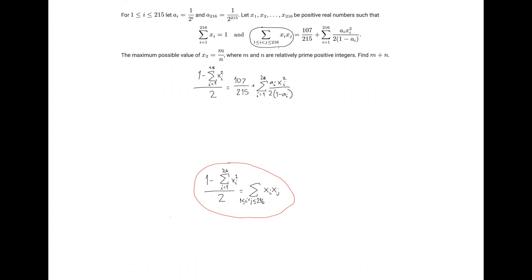Now that we have a nicer way to express this summation, we plug in our expression and find an equation. We should try to combine the like terms: we have a sum of x_i² from i=1 to 216 on both sides, and non-summation constants — a half on one side and 107 over 215 on the other. Because the sum bounds are the same, we can combine the two sums into one.